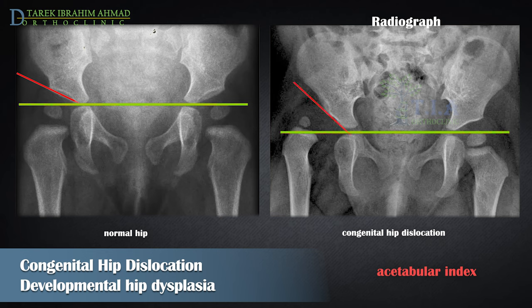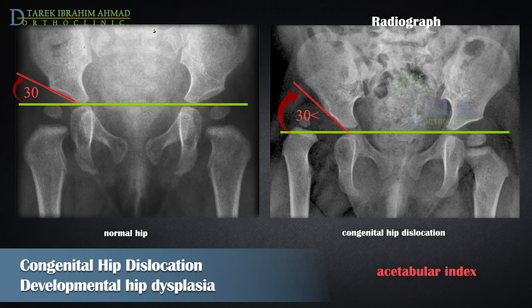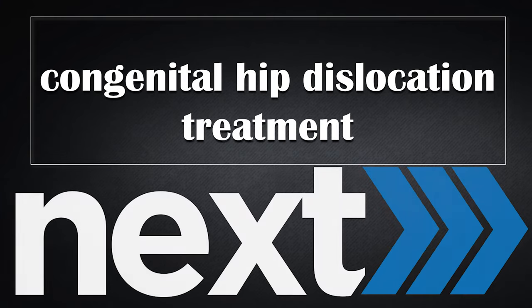The acetabular index, also called the acetabular roof angle, is a radiographic measurement of femoral head bony coverage by the acetabulum. It is the angle formed by Hilgenreiner's line and a line from the lateral triradiate cartilage to the lateral margin of the acetabulum. It should be less than 25 degrees in patients older than six months, and less than 20 degrees at two years; an angle of 30 degrees or more is considered abnormal. We will discuss the treatment options of DDH in children in a future session.